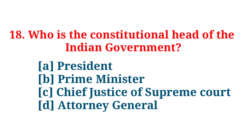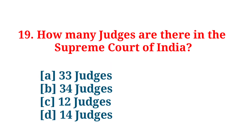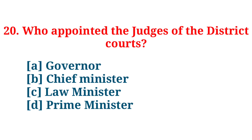Who is the constitutional head of the Indian government? Answer: President. How many judges are there in the Supreme Court of India? Answer: 34 judges. Who appoints the judges of the district court? Answer: Governor.